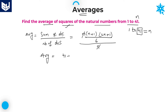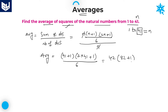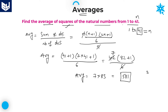Average is equal to (41+1)(2×41+1) divided by 6, which is 42 × 83 divided by 6. We can cancel with the 6 table — 6 sevens are 42 — so it becomes 7 × 83. What is 7 × 83? 7 threes are 21, carry 2; 7 eights are 56, plus 2 equals 58. Therefore the answer is 581.